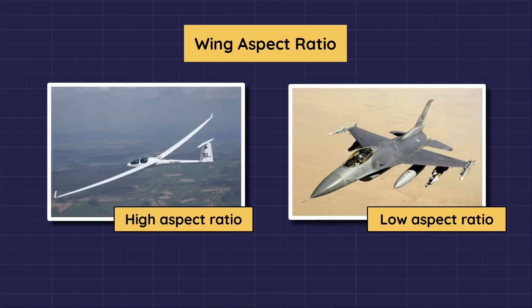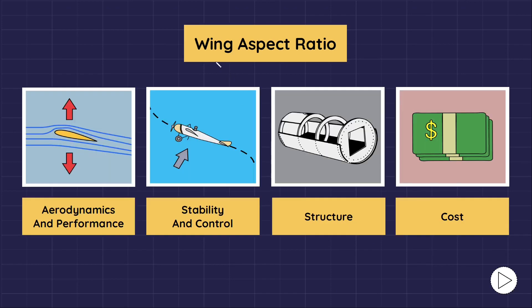A long narrow wing has a high aspect ratio, whereas a short wide wing has a low aspect ratio. Now let's discuss the effect of wing aspect ratio on various aircraft features, such as aerodynamics and performance, stability and control, aircraft structure, and aircraft cost. Let's begin with the effect of wing aspect ratio on aerodynamics and performance.